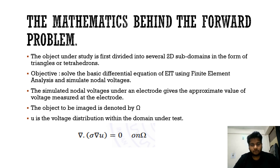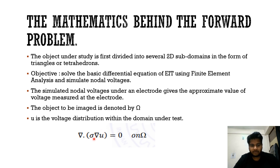Now we understand the mathematics behind the forward problem and how we can solve it numerically using finite element analysis. We can simulate nodal voltages by solving the forward problem and compare results without even using EIDORS. The object under study is first divided into several 2D subdomains in the form of triangles or tetrahedrons — this is meshing. The objective of the forward problem is to solve the basic differential equation, which is Maxwell's equation written in a more specific form. The simulated nodal voltages under an electrode give the approximate value of the voltage measured at that electrode. Here omega denotes the object under study, and U is the voltage distribution within the domain.